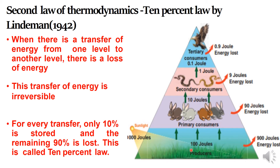For example, if producers have 1000 joules of energy, 10% is stored in the producers' tissues, which is 100 joules. The remaining 900 joules of energy is lost. Next, from producers to primary consumers — herbivores. Herbivores receive 100 joules. Their tissues store only 10 joules; the remaining 90 joules is lost through respiration as heat. Then 10 joules is transferred to secondary consumers, who store only 1 joule, and the remaining 9 joules is lost.